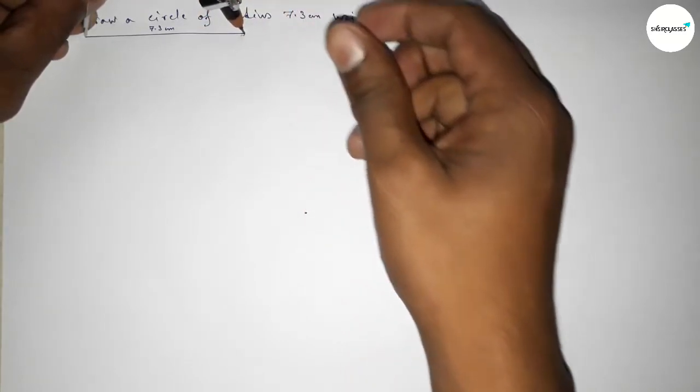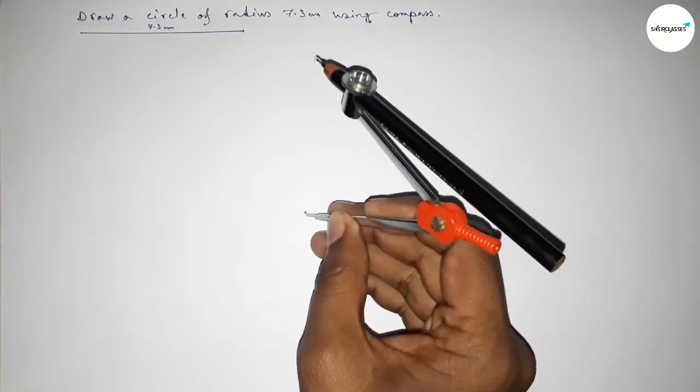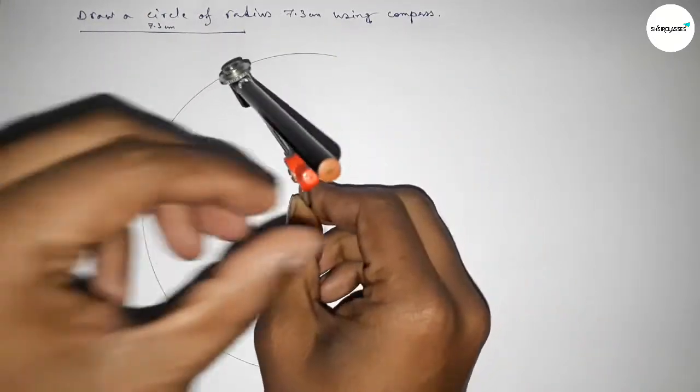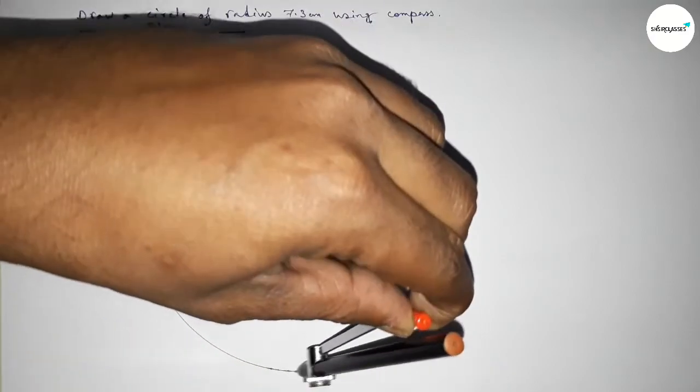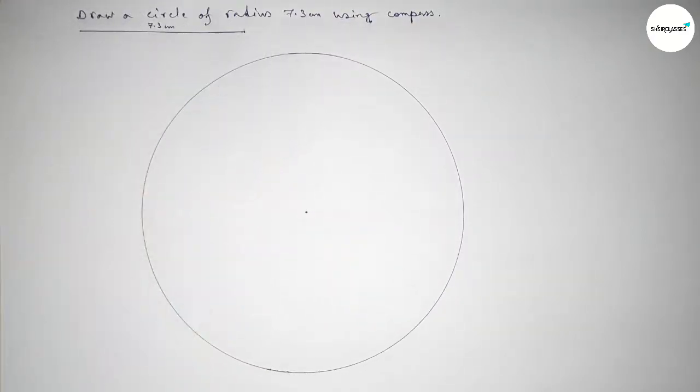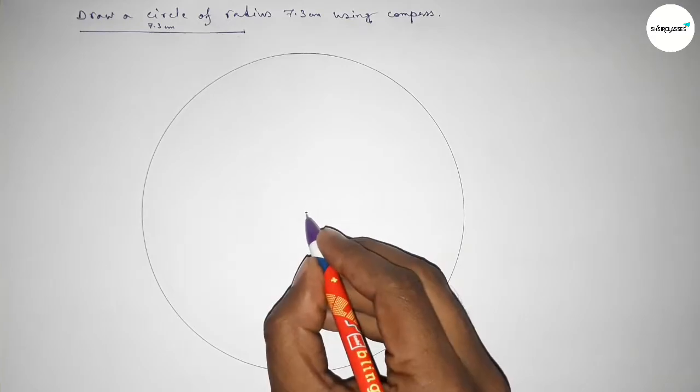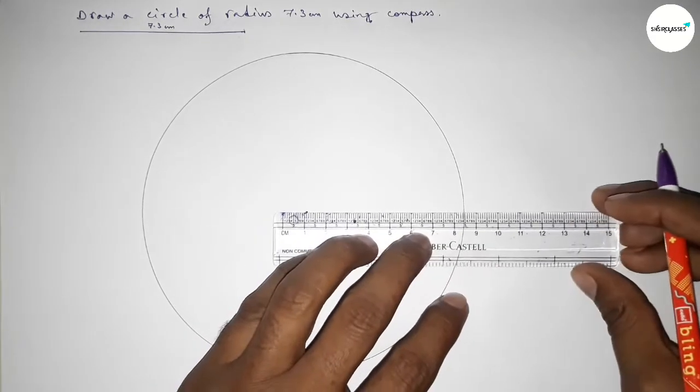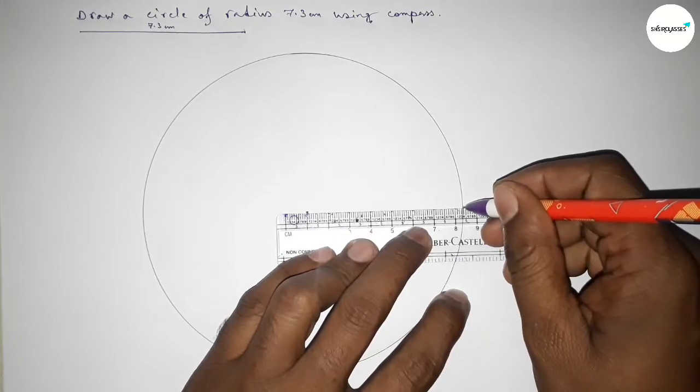using the compass this way, putting the compass on the point here, and now drawing an arc like this, which represents a circle. Now taking the center O, joining this line